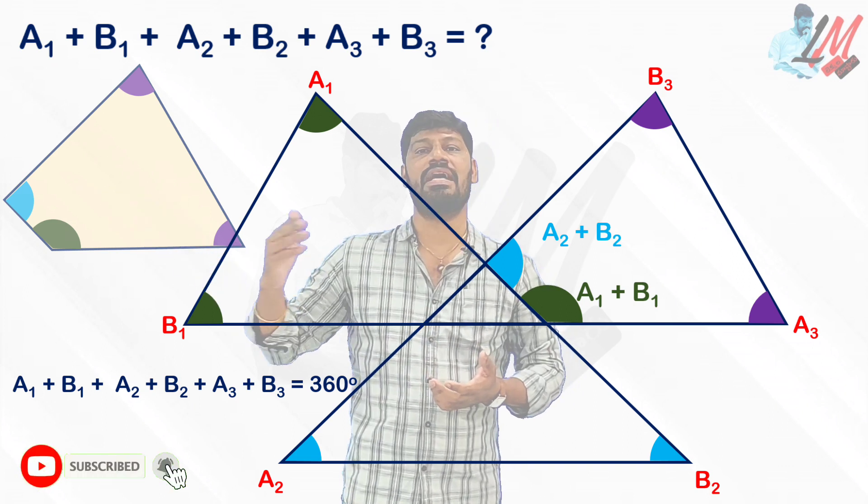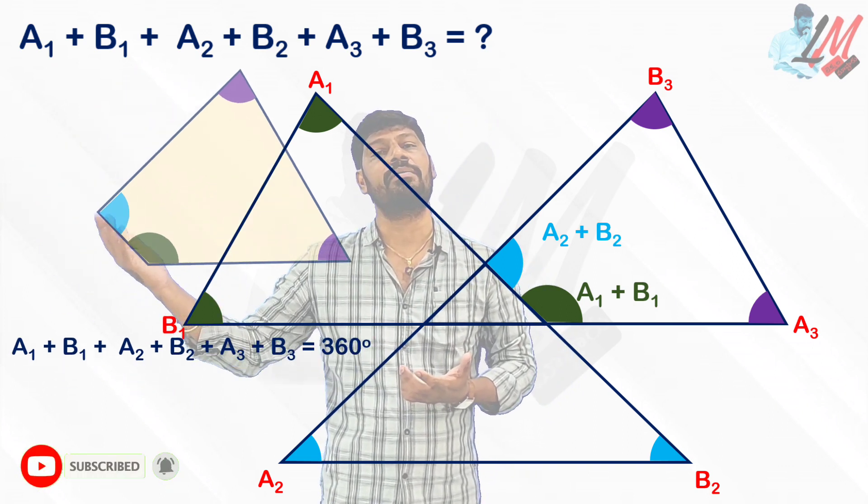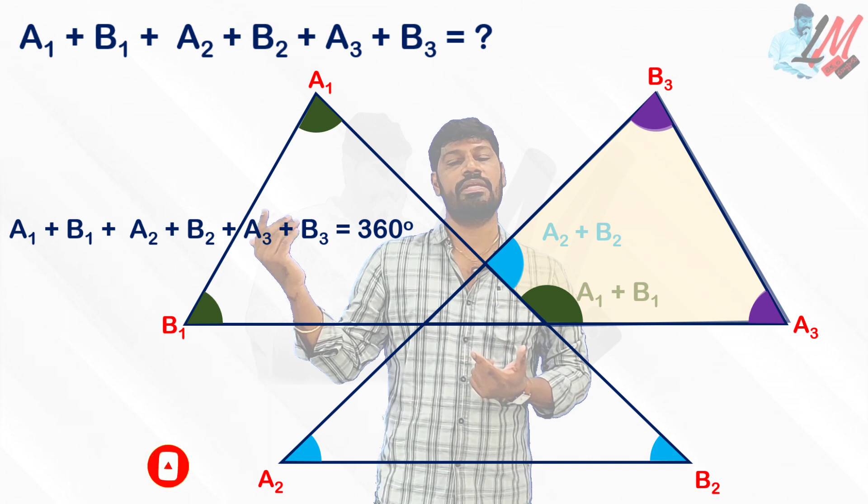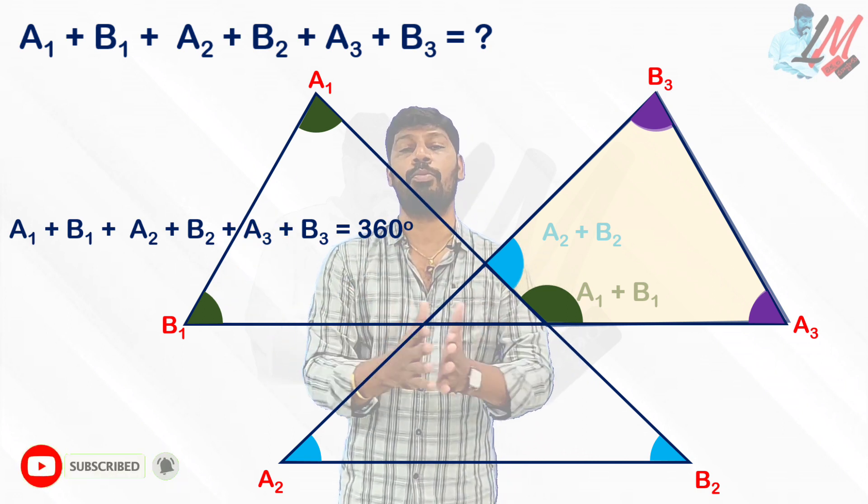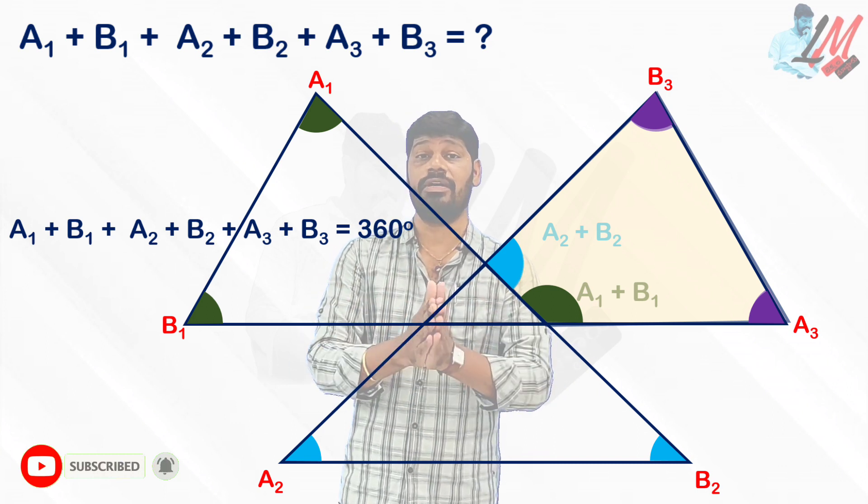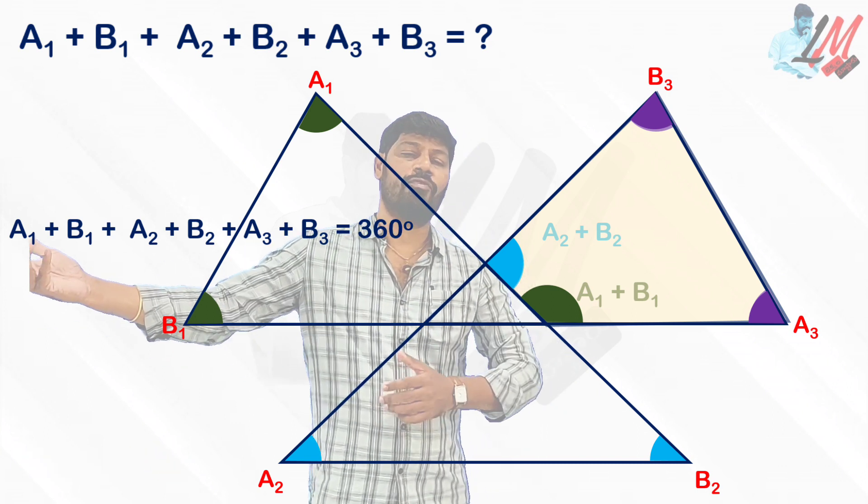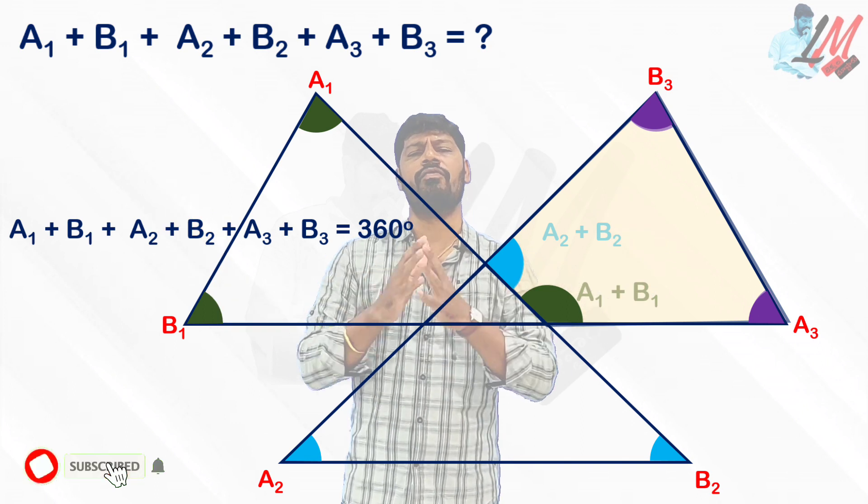A1 plus B1 plus A2 plus B2 plus A3 plus B3 equals 360. Just with the help of angle sum property of triangle, exterior angle property of triangle, and angle sum property of quadrilateral, you can solve this problem. Very simple and most beautiful problem.